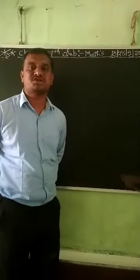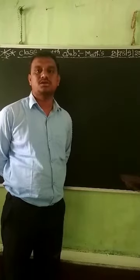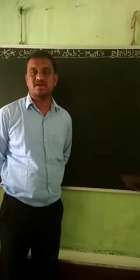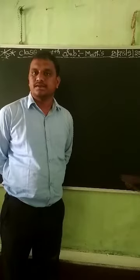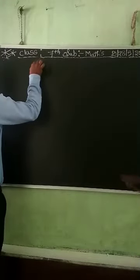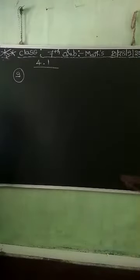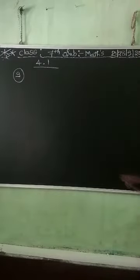Hello friends, myself Rajesh from Universal Public School Shahjani. In the last class we started Exercise 4.1 and completed up to question 8. Now we start question 9 in Exercise 4.1 — represent each of the following rational numbers on a number line.